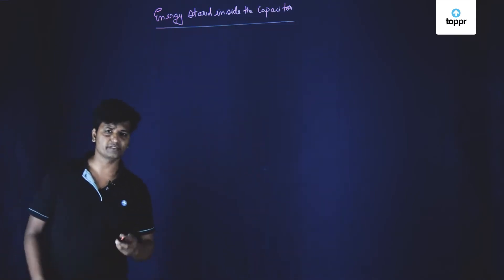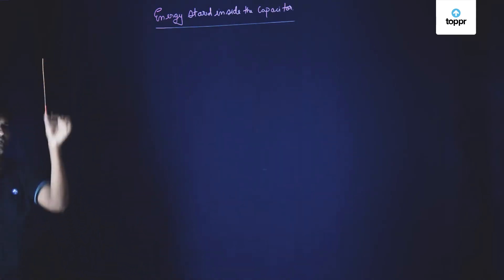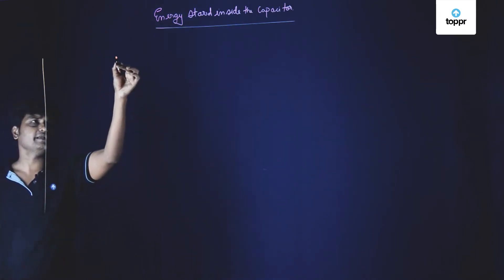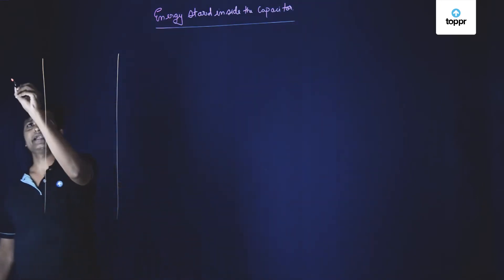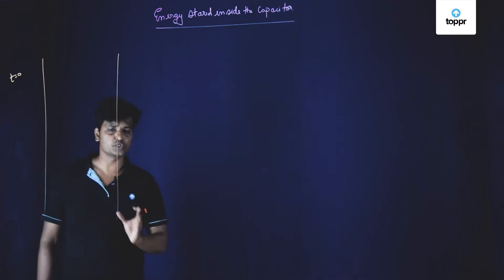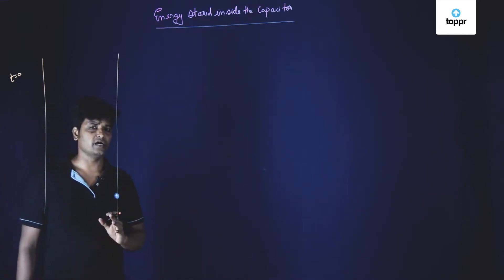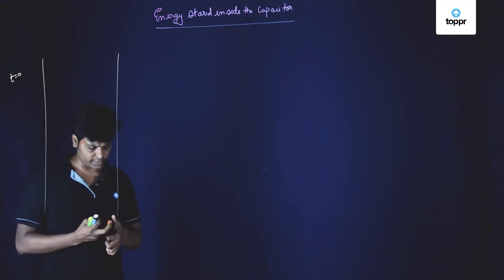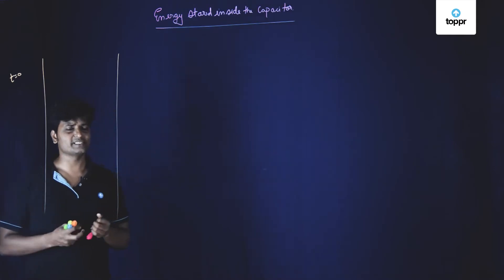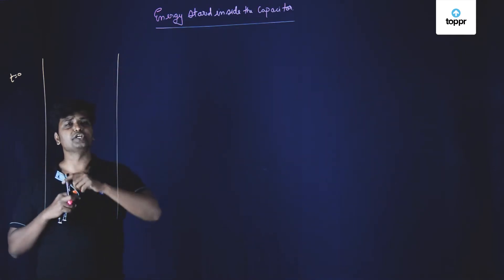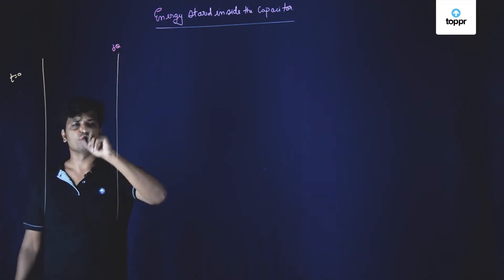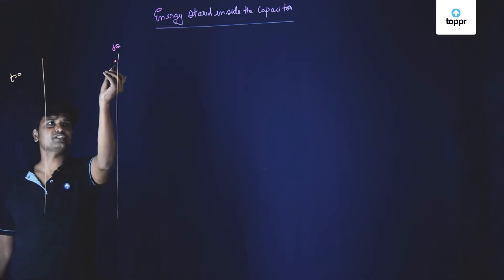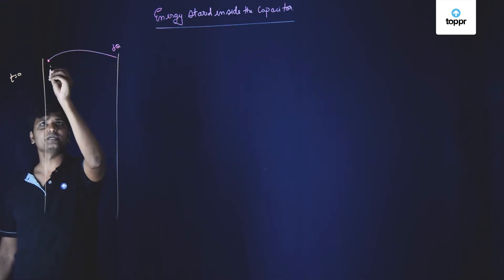We will have two plates of the capacitor — one plate and another plate. Currently, at time t = 0, these two plates are completely neutral; they are not charged. Now what I am doing is, at time t = 0, I have started plucking charge dq from one plate of the capacitor and transferring this charge from this plate to the other plate.